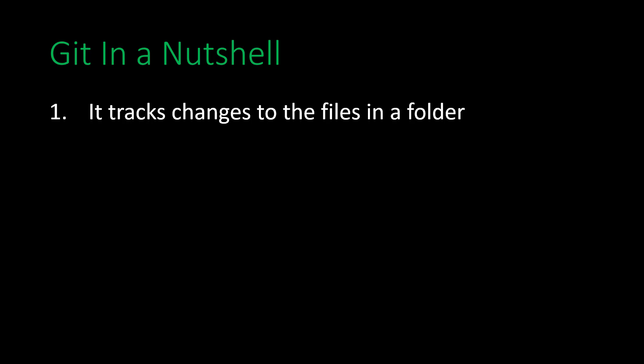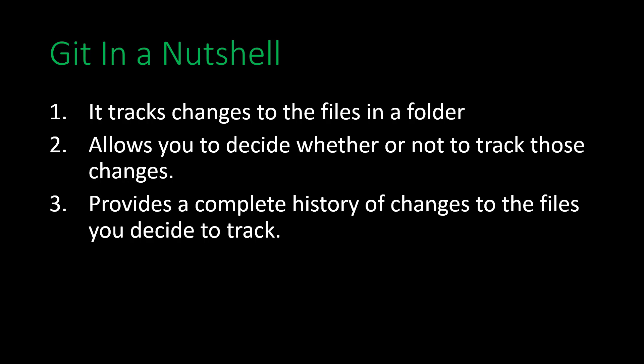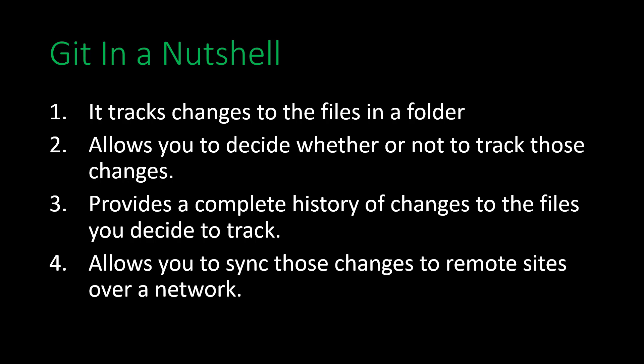So let's talk about Git in a nutshell. For our purposes, we're going to assume that it does four things — it does a lot more than this, but this is a great start for beginners. It tracks changes to the files in a folder. It allows you to decide whether or not you should track those changes. It provides a complete history of the changes — it's kind of like a universal undo button. And it allows you to sync those changes to remote sites over a network.